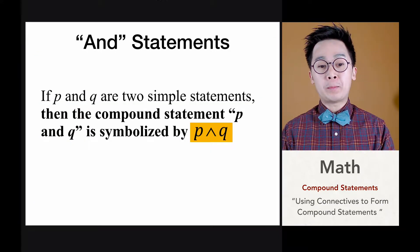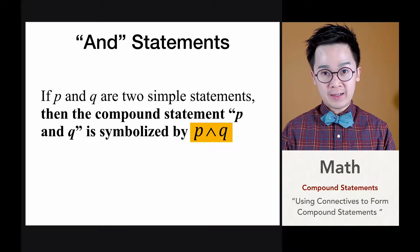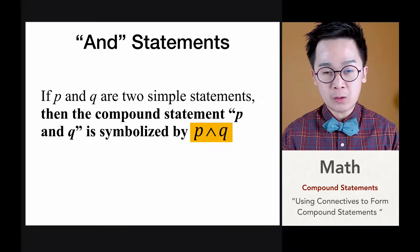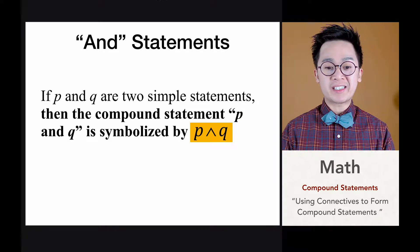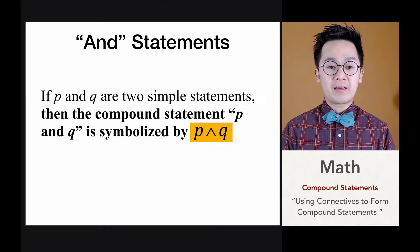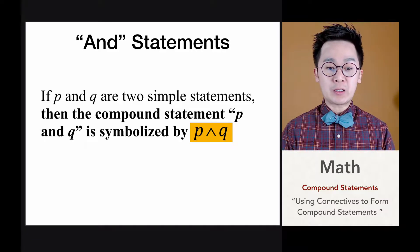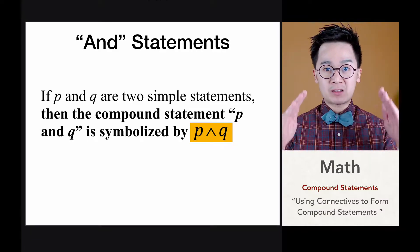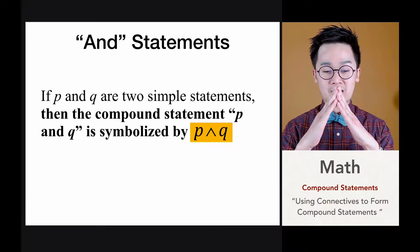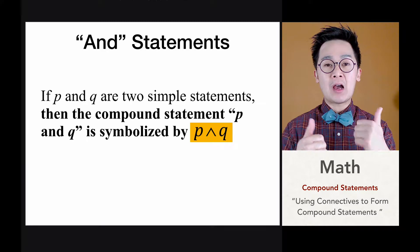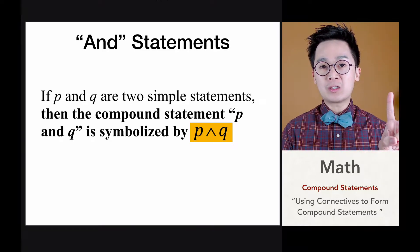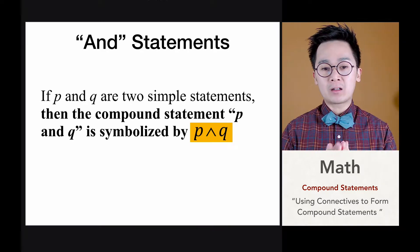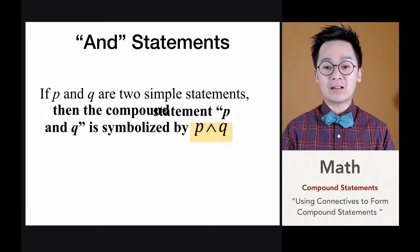Let's start with the AND operation, which is defined as follows: if statement P and statement Q are two simple statements, then the compound statement P AND Q is symbolized using the conjunction symbol. What you're seeing right now is the symbol we use for two statements joined by the AND connective, written as P ∧ Q.